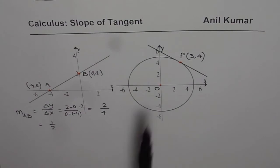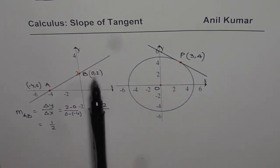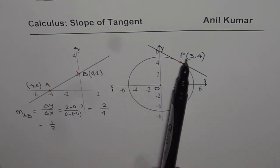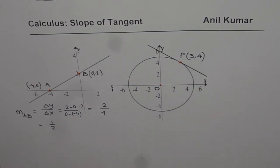Now the question for you is how do you find slope of this line which is tangent to the circle at P, 3, 4 with center at 0. Now here we have only one point into consideration. And how do you find slope when only one point is given to you? Think about it.